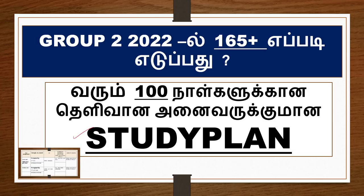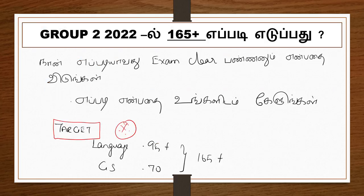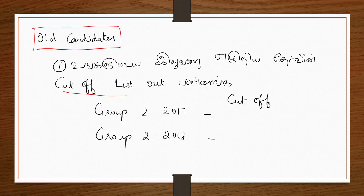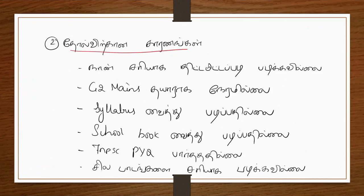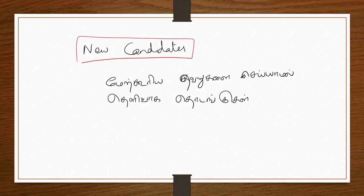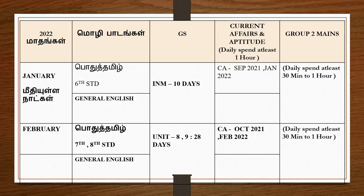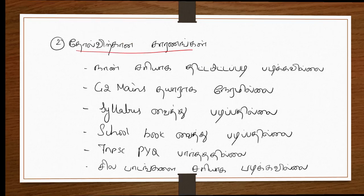We have a study plan. We have first-time candidates, other candidates, and new candidates. There are mistakes that you have done. There are rules for new candidates. The plan covers Tamil, General English, GS, Current Affairs, and Aptitude. This is the study plan — it is a route, not easy.